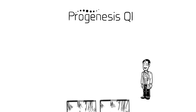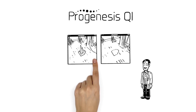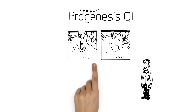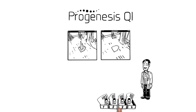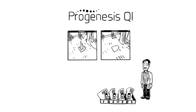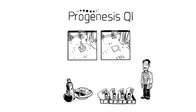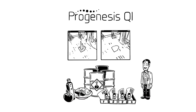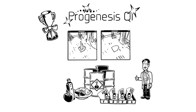He will be able to discover differences in samples like never before — whether comparing medical samples looking for biomarkers of disease, food examples for authenticity, or batch variations in chemical raw materials. Progenesis will help Michael produce the high quality results he can depend on.